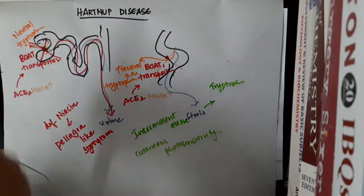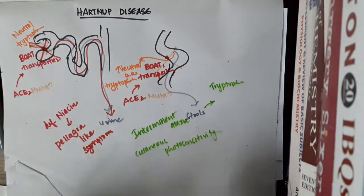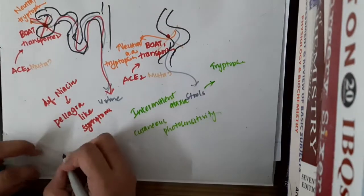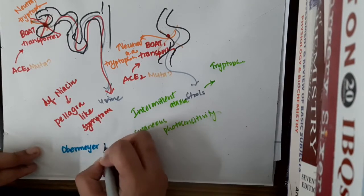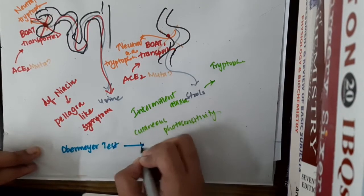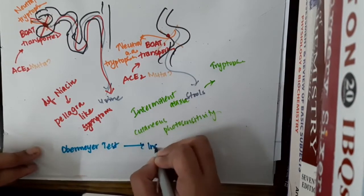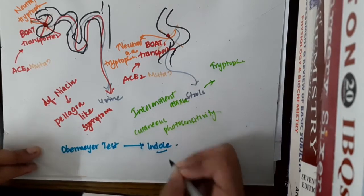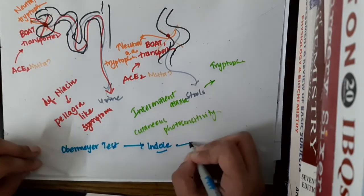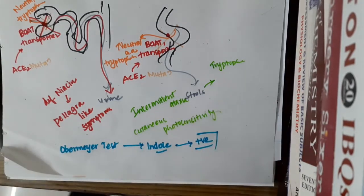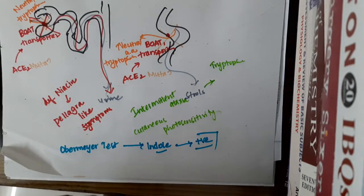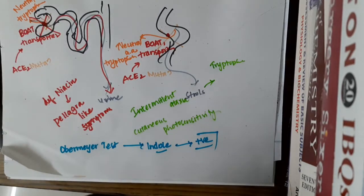The diagnosis of Hartnup disease is made by a test called the Obermeyer test. In this test, we test for these indole compounds. If the indole compounds are positive, it confirms that tryptophan is being excreted in the stools, and it is positive for Hartnup disease.